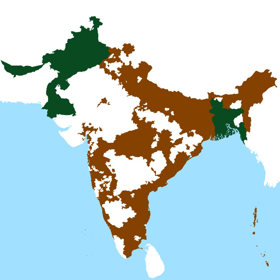The Act's most important provisions were: division of British India into the two new and fully sovereign dominions of India and Pakistan, with effect from 15 August 1947; partition of the provinces of Bengal and Punjab between the two new countries; establishment of the office of Governor-General in each of the two new countries as representatives of the Crown; and conferral of complete legislative authority upon the respective constituent assemblies of the two new countries.